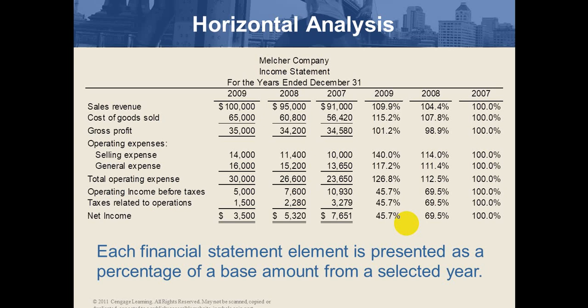In horizontal analysis, we select one year to be considered as the base year. We have the same income statement data for the same company for three years: 2007, 2008, and 2009. We select the oldest year — 2007 — as the base year, and calculate each number as a percentage of the similar number in that base year. This is the first method: trend analysis, where the base year is assigned 100%.